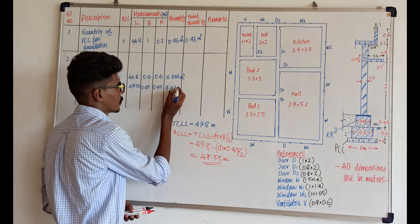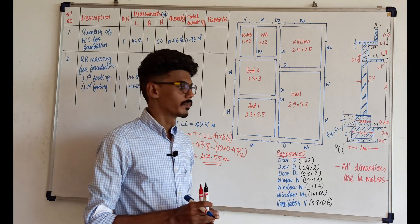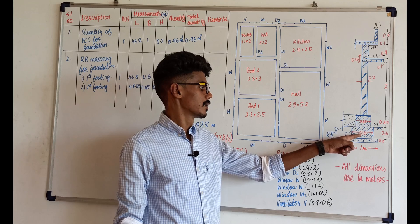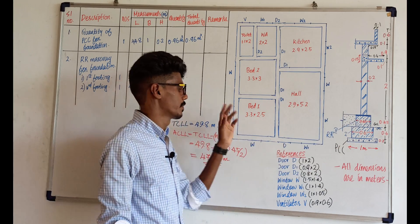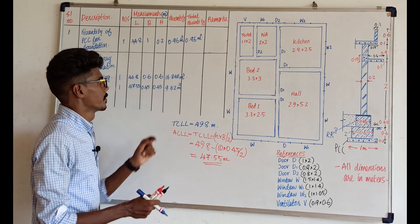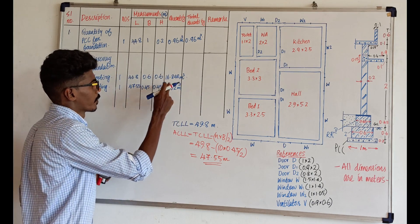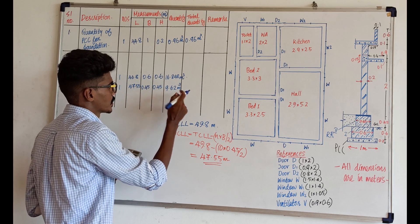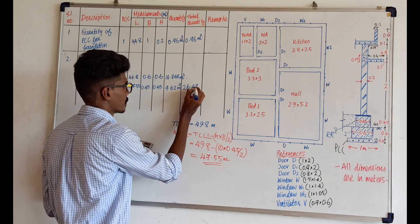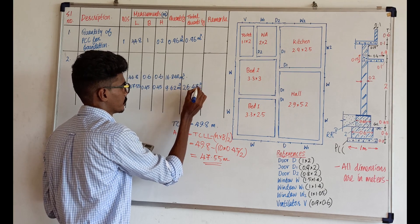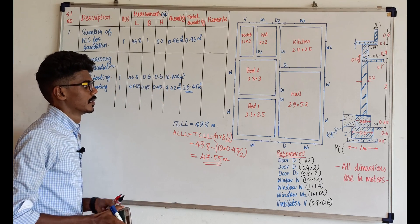So 47.55 meters, with breadth 0.45 meters and height 0.45 meters — multiplying these three values gives 9.62 meter cubes. We have the answer: 26.47 m³ and 22.5 m³.